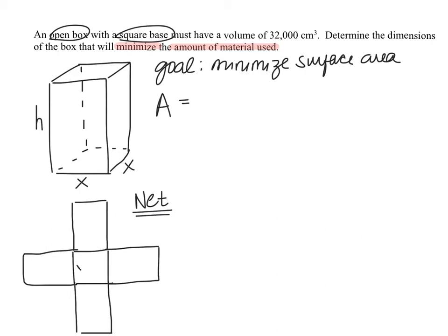I'll label the net. The base is X by X. The front face of the box is a rectangle with a base of X and a height of H, so its area is X times H — and that rectangle in the net gets labeled H there. The right-hand side of the box is also a rectangle with base X and height H, corresponding to another rectangle in the net, also labeled H.